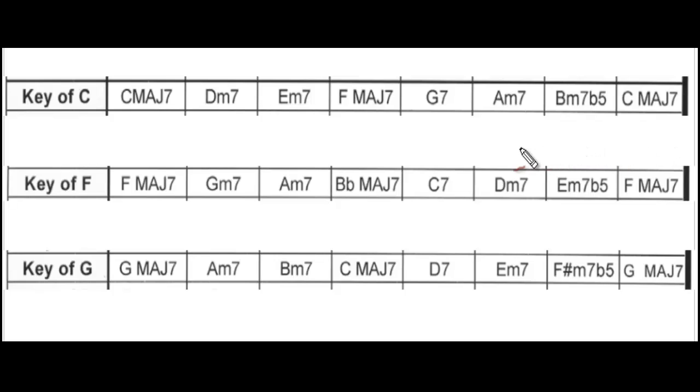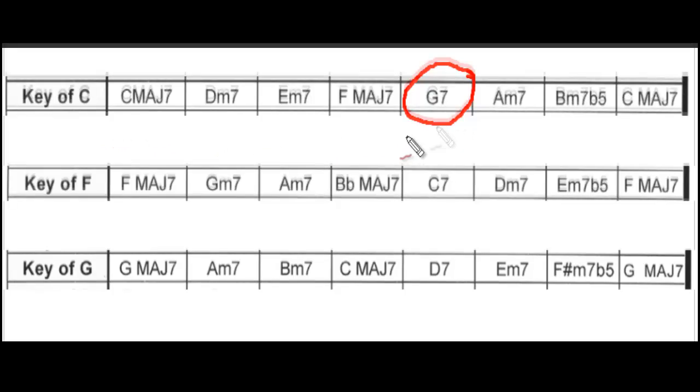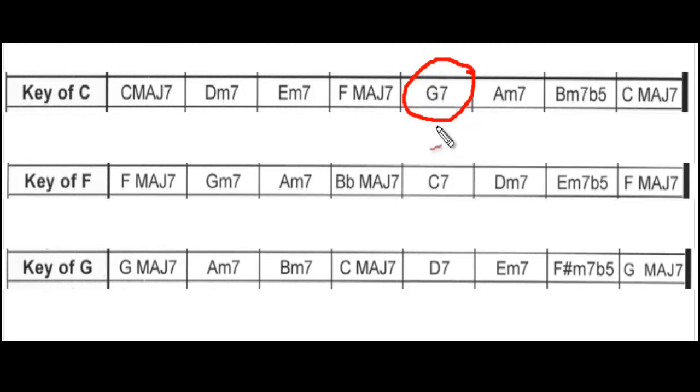So looking at each chord in our 12 bar blues progression we can see that the dominant 7th chords are chord 5 in each key. The G7 chord is chord 5 in the key of C, therefore we could play a G Mixolydian mode over the G7 chord. The C7 chord is chord 5 in the key of F, we could play a C Mixolydian mode over the C7. And D7 is chord 5 in the key of G, and we could play a D Mixolydian mode over the D7.